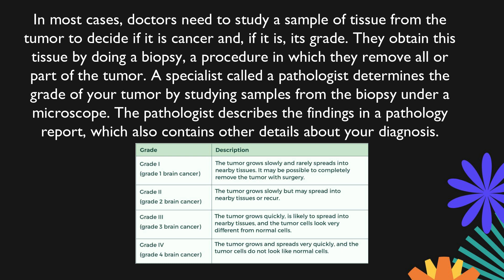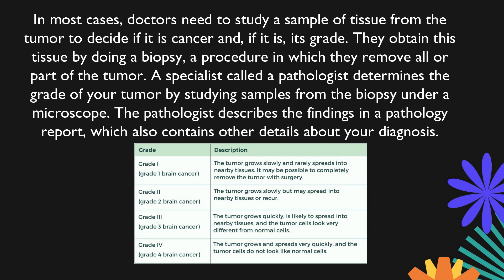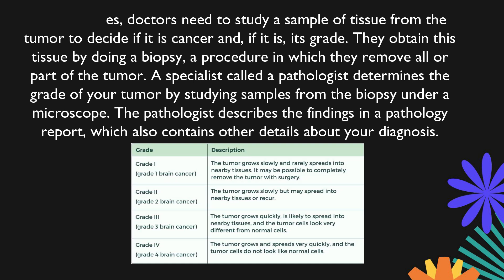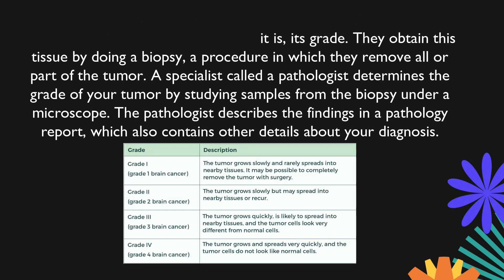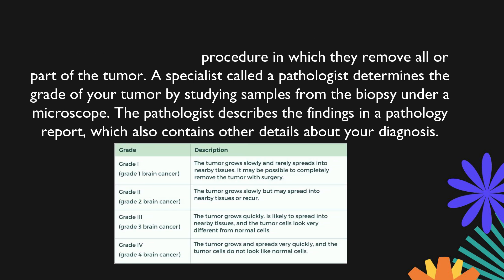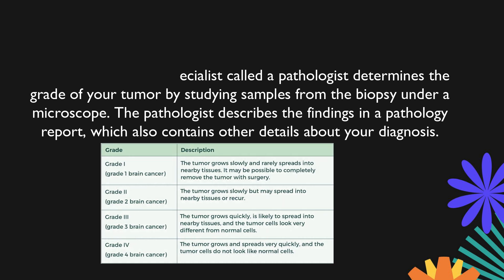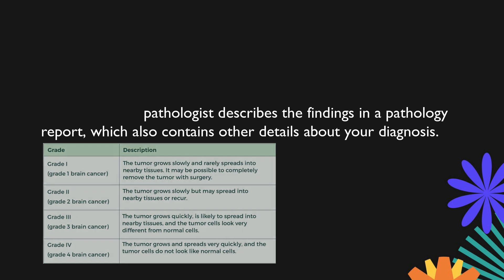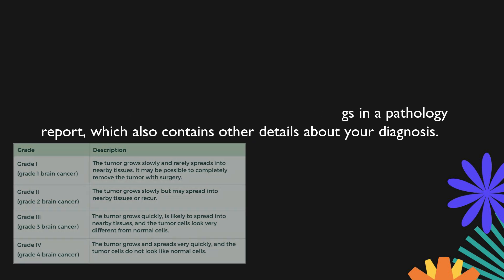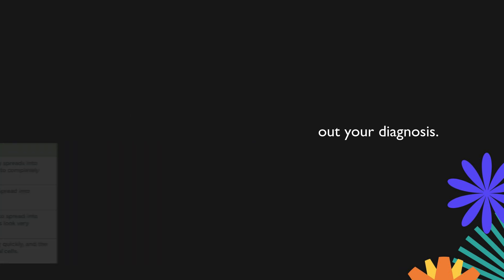The pathologist describes the findings in a pathology report, which also contains other details about your diagnosis. Cells that look more normal might be called well differentiated in the pathology report, and cells that look less normal might be called poorly differentiated or undifferentiated. Based on these and other features of how cells look under the microscope, the pathologist will assign a number to describe the grade.